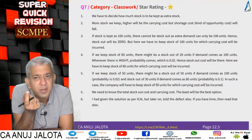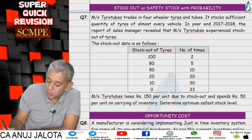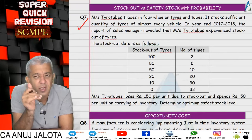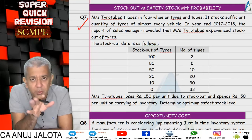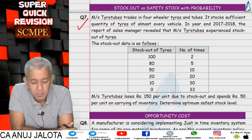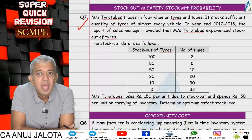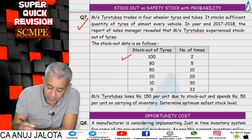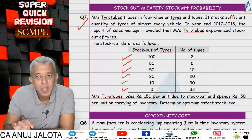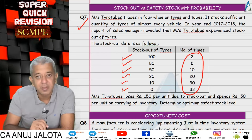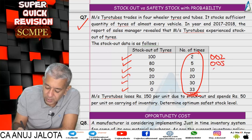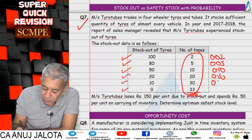Question number 7 is about safety stock. A company is facing stock-outs and is considering keeping extra stock — options are 100, 80, 50, 20, 10, or 0 units. The number of times stock-out has occurred is given; we total it to 100 and derive probabilities. We solve this approximately six times — first, if extra stock is 100 units, stock-out becomes zero but we carry 100 units, incurring carrying cost.